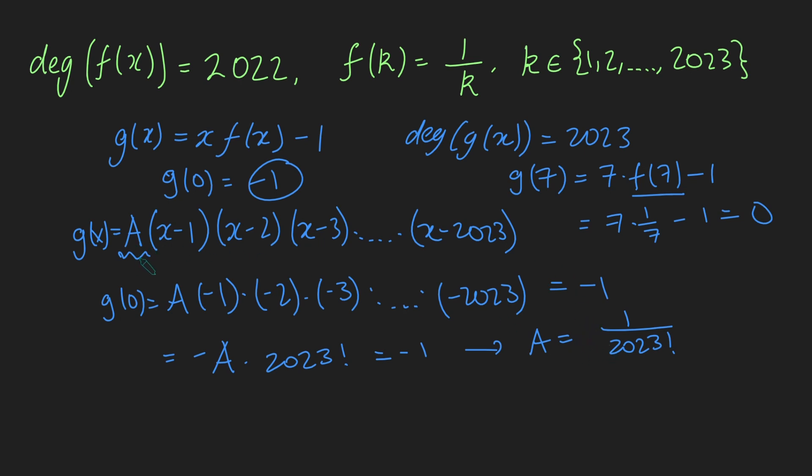Amazing. We've worked out what our constant is, so we know exactly what g of x is, which means in order to work out f of 2024, all we need to do is substitute 2024 into this guy here, and we'll work out what g of 2024 is, and then we'll just have to rearrange up here. Okay, let's do that then. So, g of 2024, then, is a, which we've worked out, is 1 over 2023 factorial, multiplied by 2024 minus 1, which is 2023, 2024 minus 2 is 2022, times 2024 minus 3, which is 2021, and so on down to 2024 minus 2023, which is just 1. And you'll notice here, this is precisely 2023 factorial, which very nicely cancels with that there. So, we get that g of 2024 must be 1.